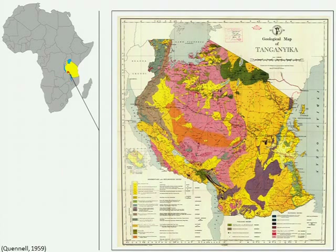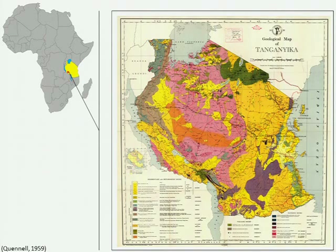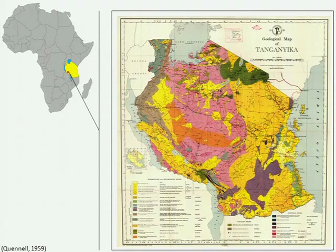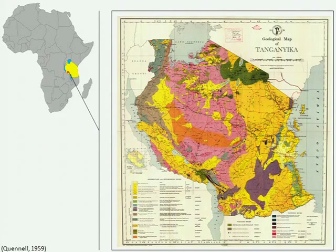One of the first things you have to come to grips with when you work in Tanzania is the enormous knowledge gaps. This geological map of Tanzania hasn't really changed since 1959. The big pink blob is the Tanzanian craton, and all the yellow areas are mobile belts — belts of deformed and metamorphosed rock. For this presentation, we're going to be looking down here next to Lake Rukwa, in the Ubendian belt.